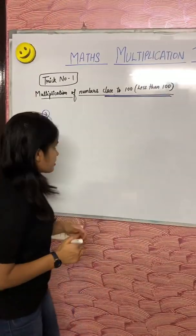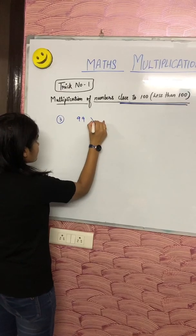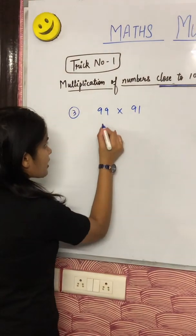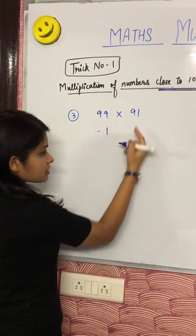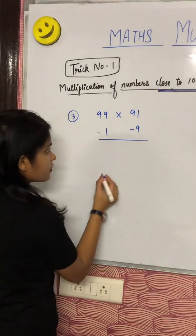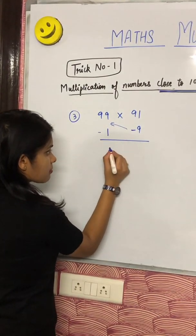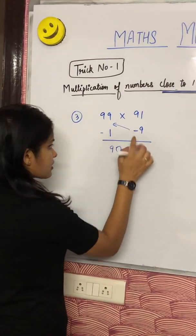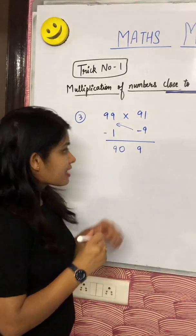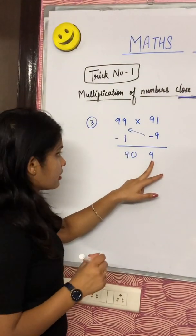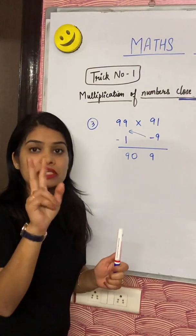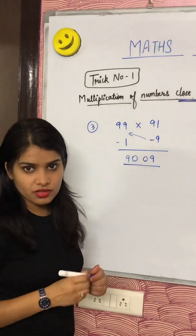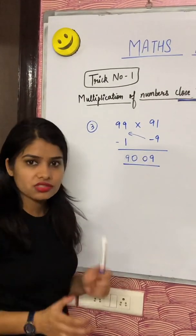Let's take one more example: 99 into 91. Can we do it more faster? Yes. 99, 100 se kitna kam hai? 1. 91, kitna kam hai? 9. So what we can do? Again same thing: 99 minus 9, kitna milega? 90. And 1 nines are 9. But students, 9 is not complete; we need two digits. So we have to put one zero here. After multiplication, do digits chahiye.